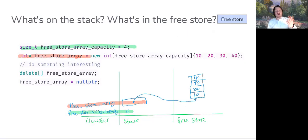Notice here that the named objects are residing on the stack. Free_store_array_capacity is a named object. It is a variable. Its memory is allocated for it on the stack. Free_store_array, that is a named object. Its type is going to be a pointer to an integer object. Its memory is allocated for it on the stack.